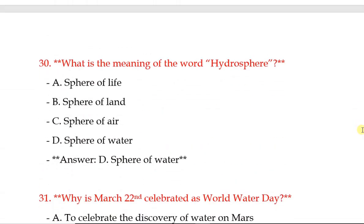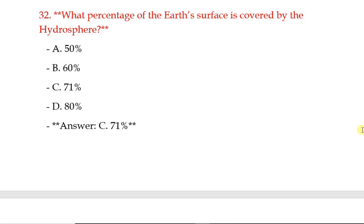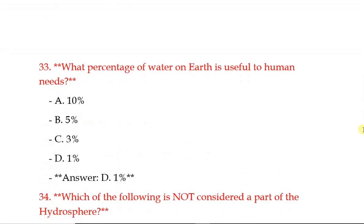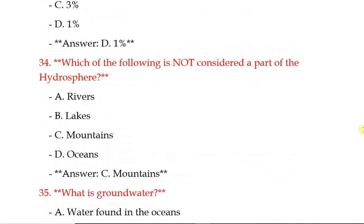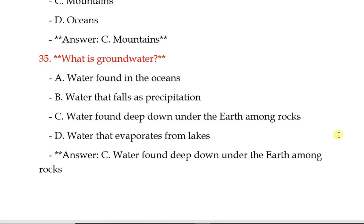What is the meaning of the word 'hydrosphere'? Sphere of water. Why is March 22nd celebrated as World Water Day? To raise awareness about the importance of freshwater. What percentage of the Earth's surface is covered by the hydrosphere? Correct answer: 71%. What percentage of water on Earth is useful to human needs? 1%. Which of the following is not considered a part of the hydrosphere? Mountains. What is groundwater? Water found deep down under the earth among rocks.